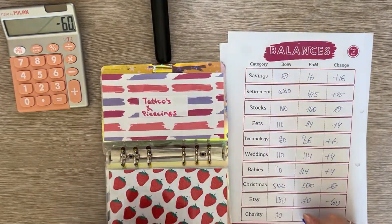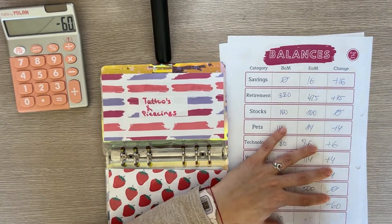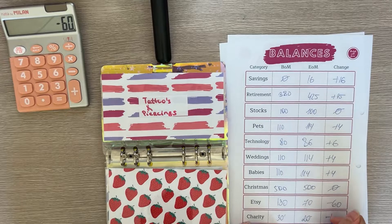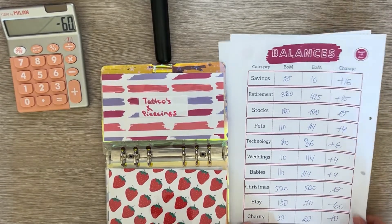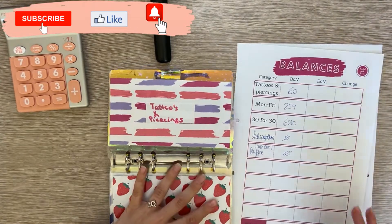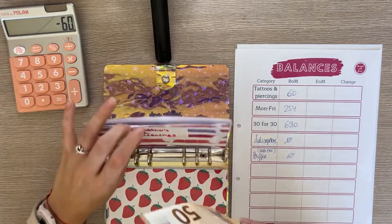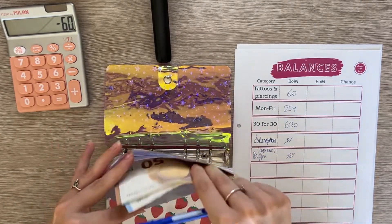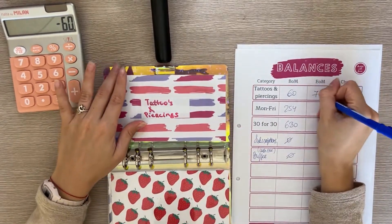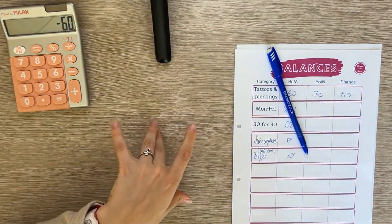Next is charity and it has now $20 so that's minus 10. I did spend some money, I donated to a children's charity so it's a negative but technically not negative because I feel like I did a good job. Tattoos and piercings has $70 and it had $60 at the beginning so that's a positive 10.